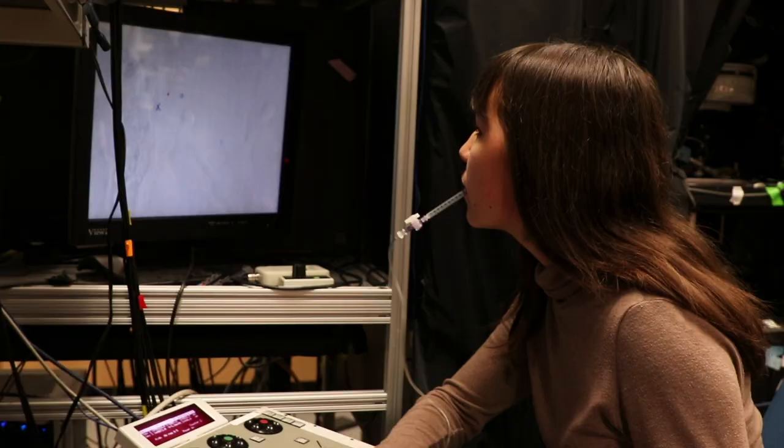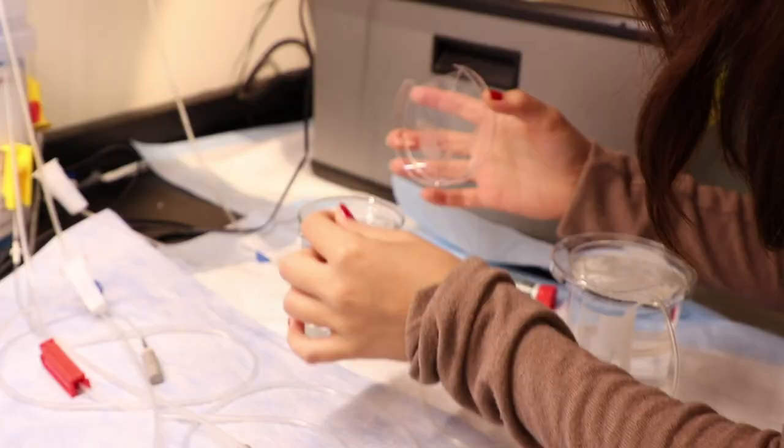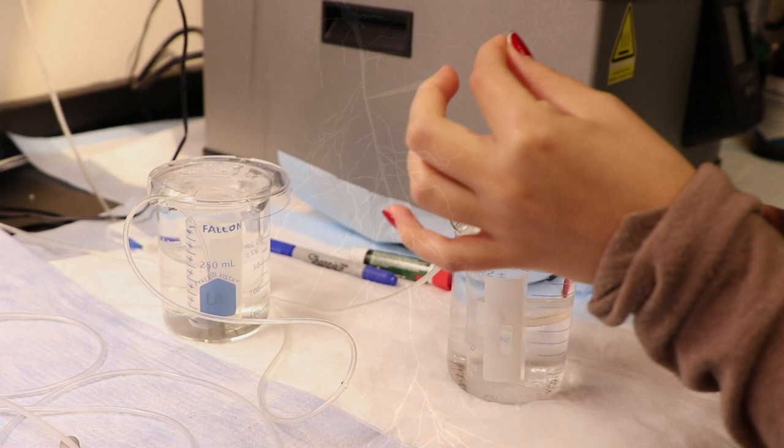I think in some ways the way that we think about neuroscience is that a lot of our modern understanding of how the brain works or how our cells function is based on animal models, particularly rats and mice, and so I'm interested in seeing whether or not human neurons are significantly different from rat neurons.